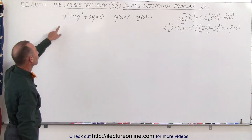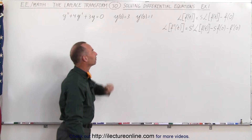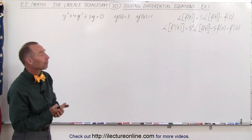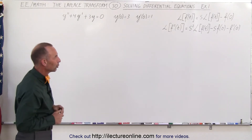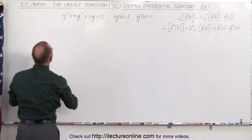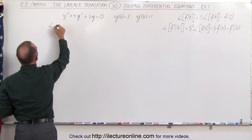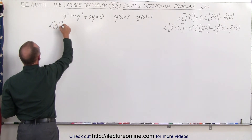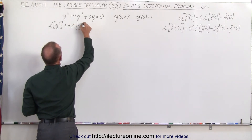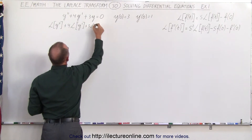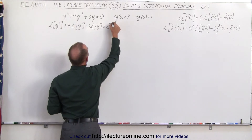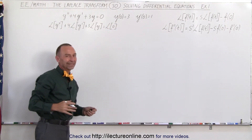Here we have a second-order differential equation with some initial conditions. We have the equations of the Laplace transform of the first derivative and the Laplace transform of the second derivative on the board. So let's take the Laplace transform of both sides of the equation. We're going to take the Laplace transform of y double prime plus four times the Laplace transform of y prime plus three times the Laplace transform of y equals the Laplace transform of zero, which is simply zero.